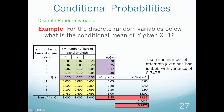For the conditional variance, we follow a similar process but square the Y terms: 1 squared times 0.05 gives 0.05, 2 squared times the conditional probability gives 0.4, and so on. We sum those values, subtract the square of the expected value, and that gives the final variance. The mean number of attempts given one bar of signal strength is 3.55, and the variance is 0.7475.